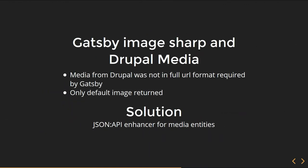Another problem is Gatsby Image Sharp in combination with Drupal media. Gatsby Source Drupal, in combination with Gatsby Image Sharp, can work with standard Drupal images but not with media. Media is returned in a format without full URLs, which is required by Gatsby. The second problem is that only the default image is returned — no image styles are exported by JSON API. As a solution, you can use the JSON API Enhancer to override the default export and export the image URL in full URL format. You can also add as many image styles as you want — already processed images, cropped or whatever your image effect might be.